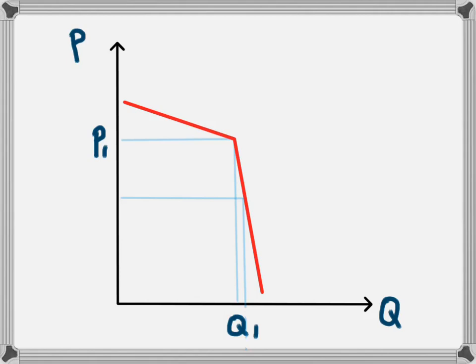That would mean that this large area here would be lost in revenue if the business were to decrease their price, and the gain that they would get would be this very, very small box here. So the impact of decreasing their price would be negative on the company.